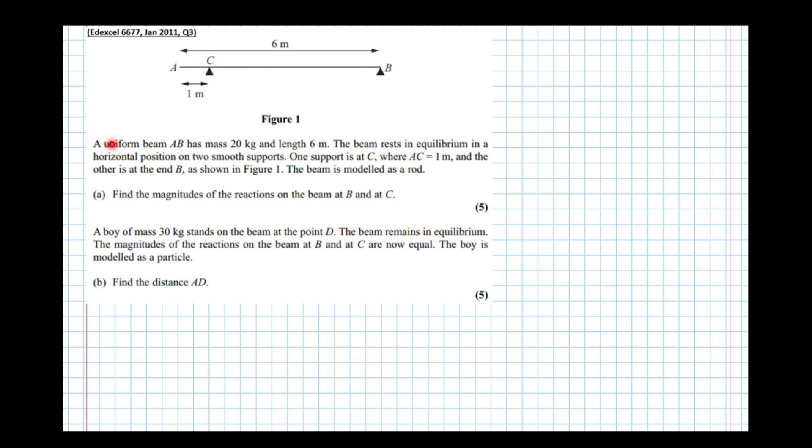Bit of information here: a uniform beam has mass 20 kilograms and length 6 meters. If it's uniform that means the center of mass is at the center of the beam, so let's mark that on there. So the center of mass there, so the weight of the beam is 20 kilograms times gravity, so 20G. So there's the weight of the beam, 20G.